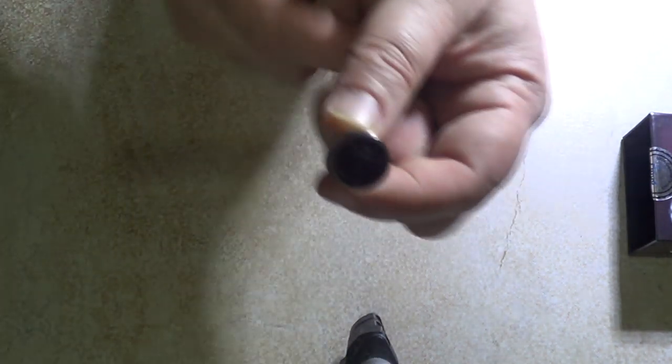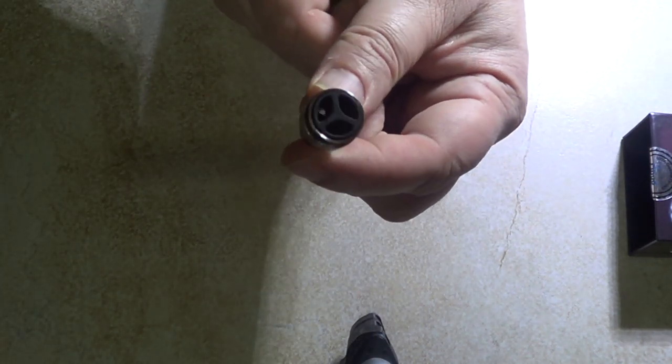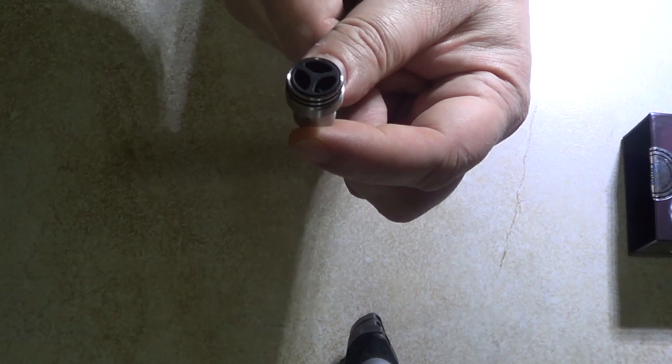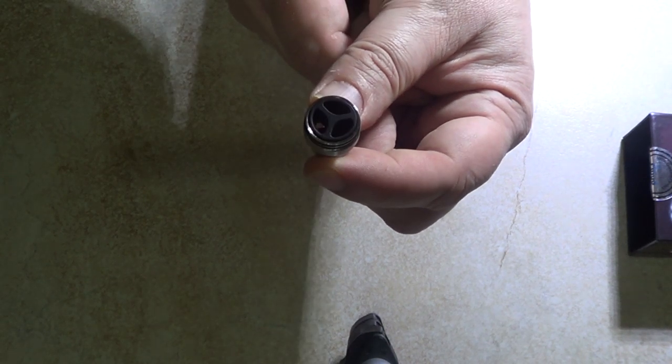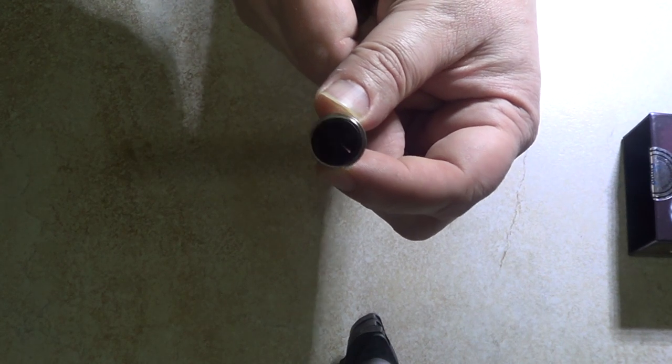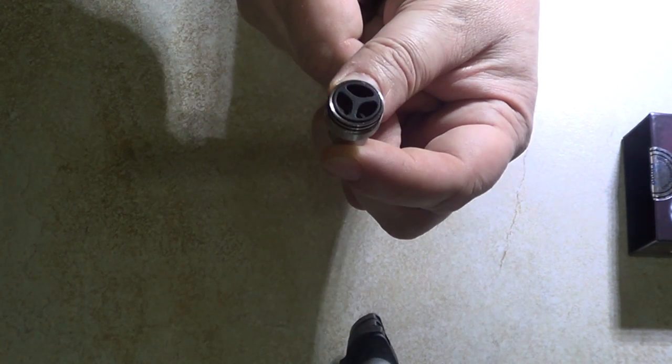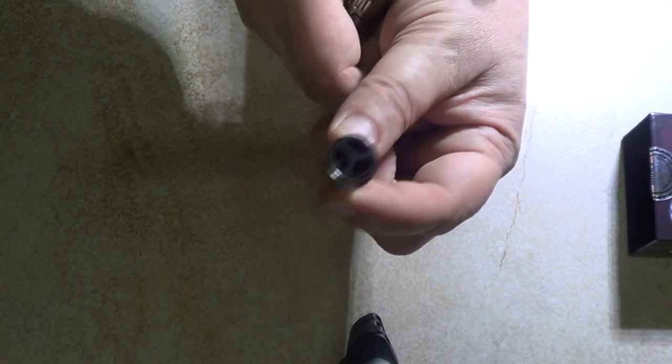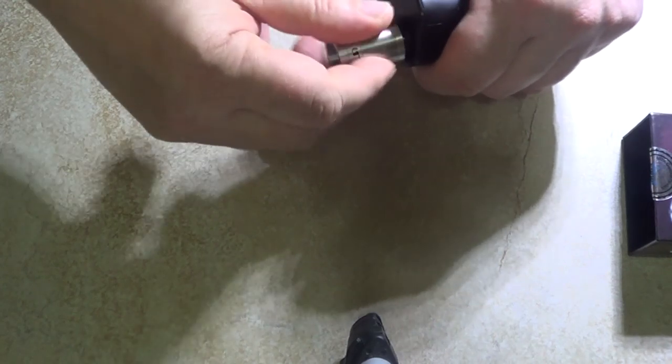I remove the drip tip, and you can already see an interesting thing at the bottom. This is nothing other than a turbine blade, which during use starts spinning due to the airflow, and thus by mixing the produced vapor, it can provide the user with an absolutely homogeneous, full, rich vapor.